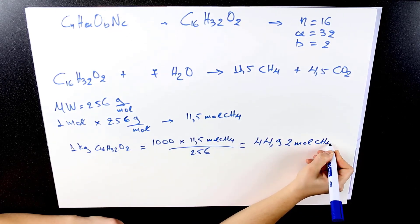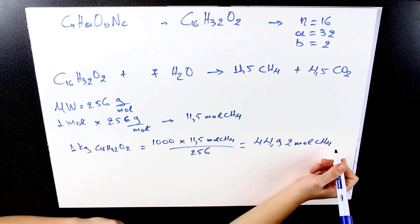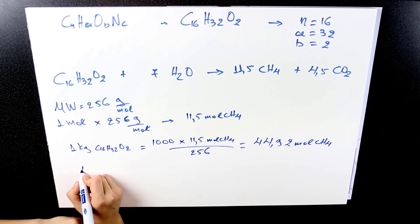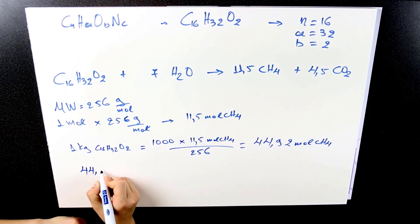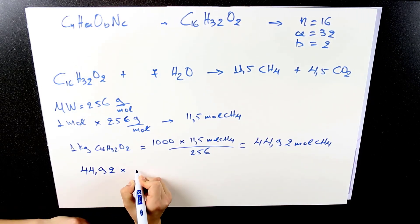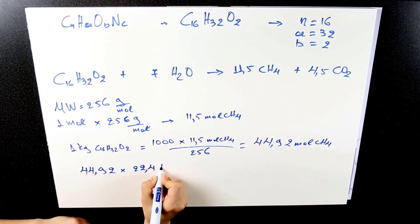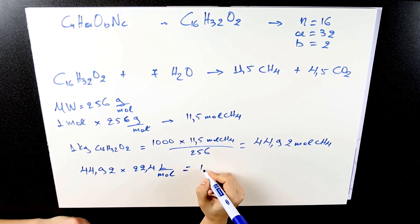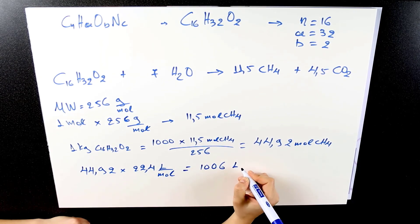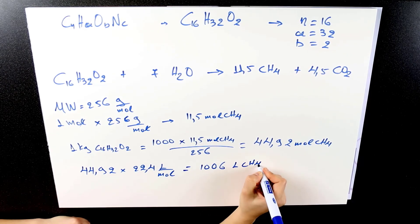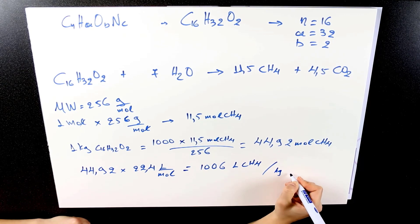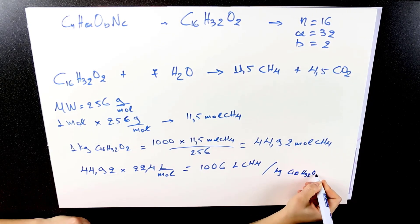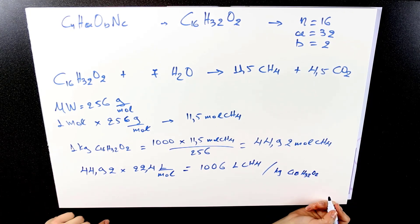In order to know how many liters those moles of methane are, we simply multiply by the standard volume, which is 22.4 liters per mole for standard conditions. That will give you 1006 liters of methane produced per kilogram of palmitic acid, or approximately 1 cubic meter of methane.